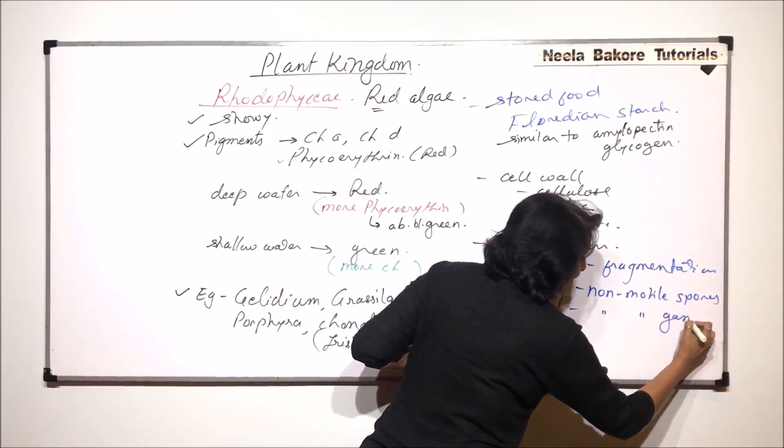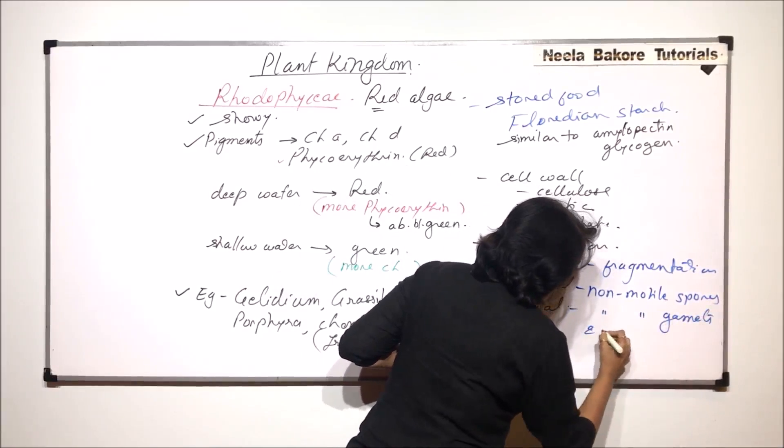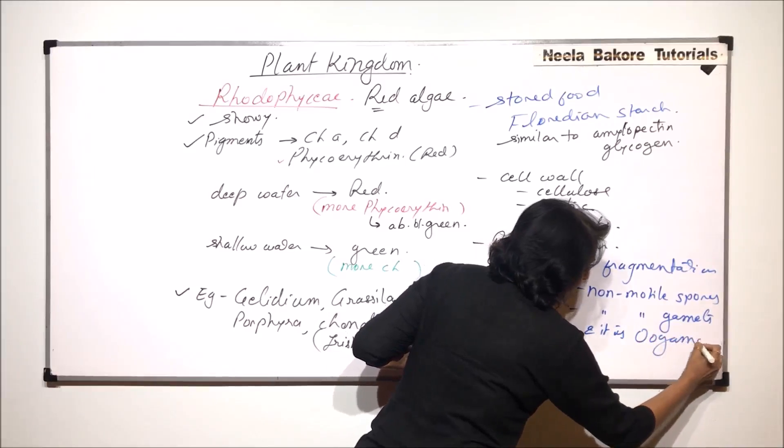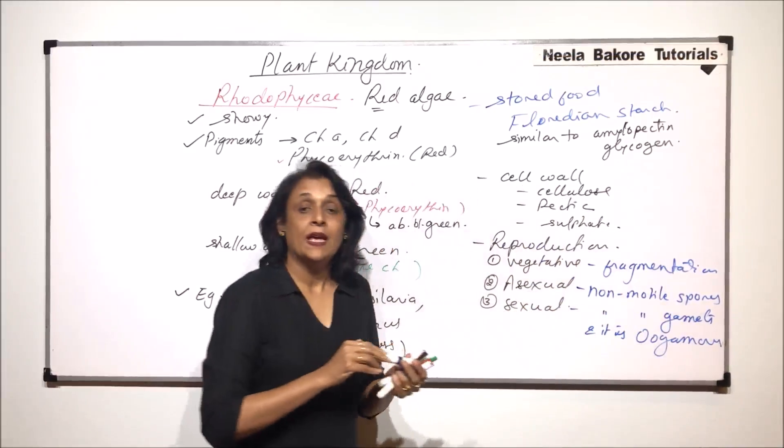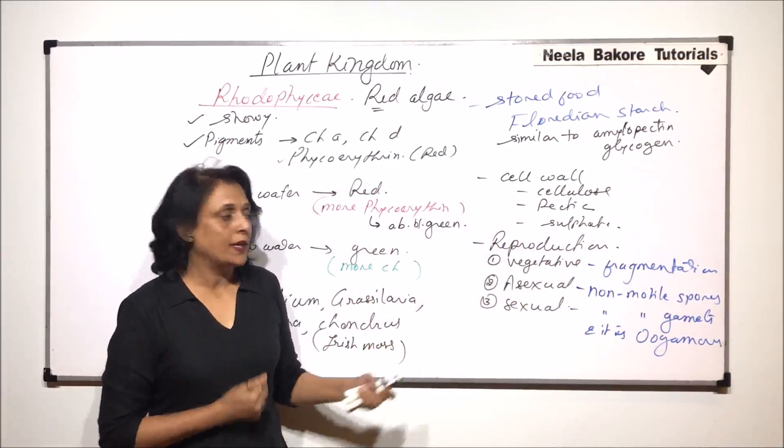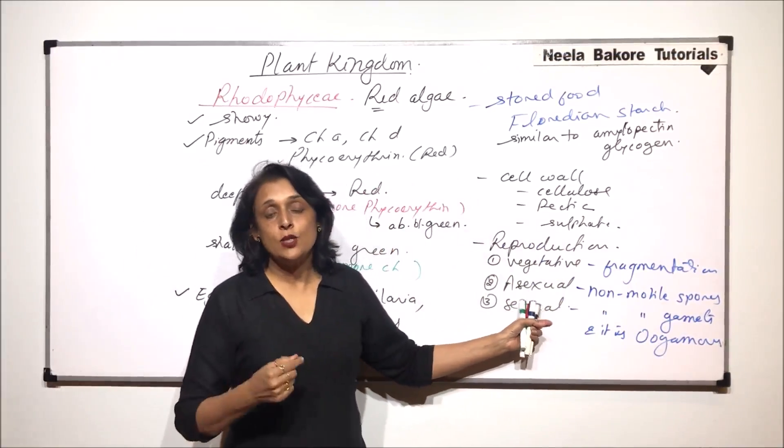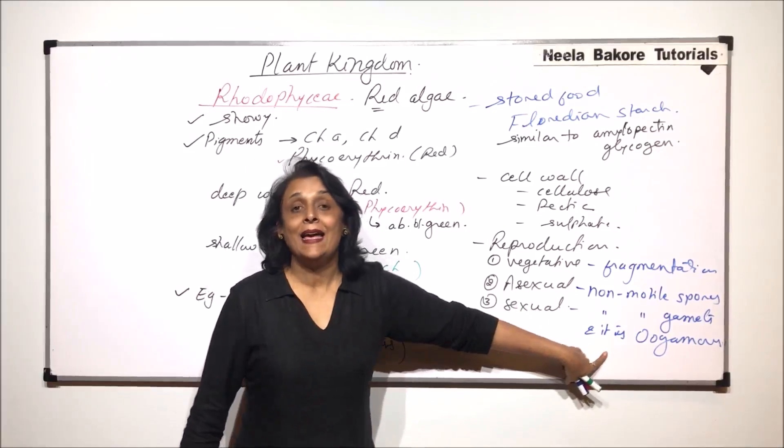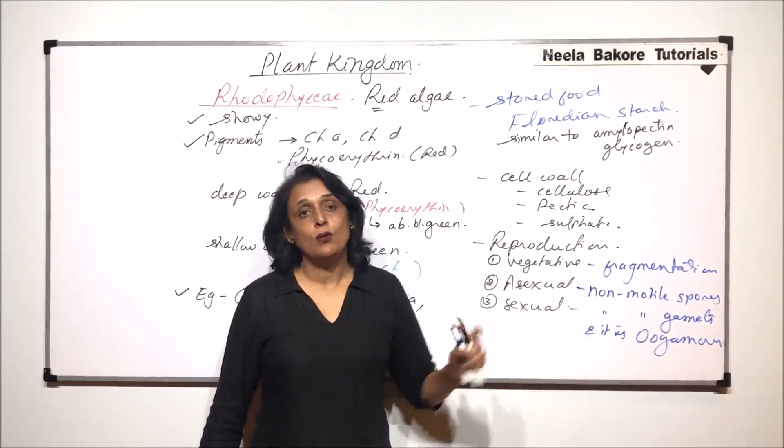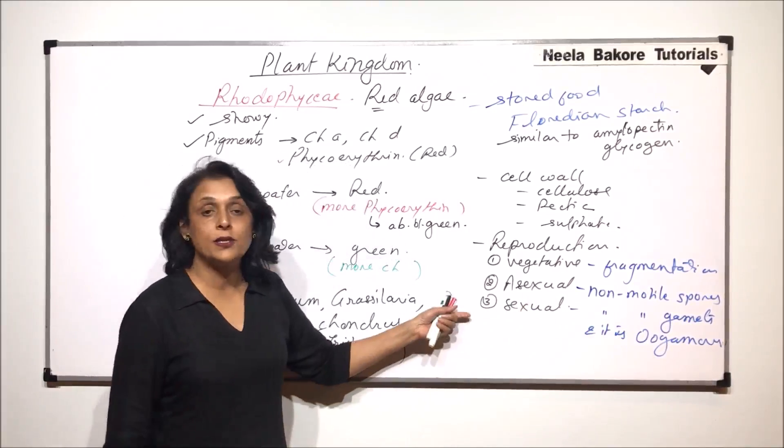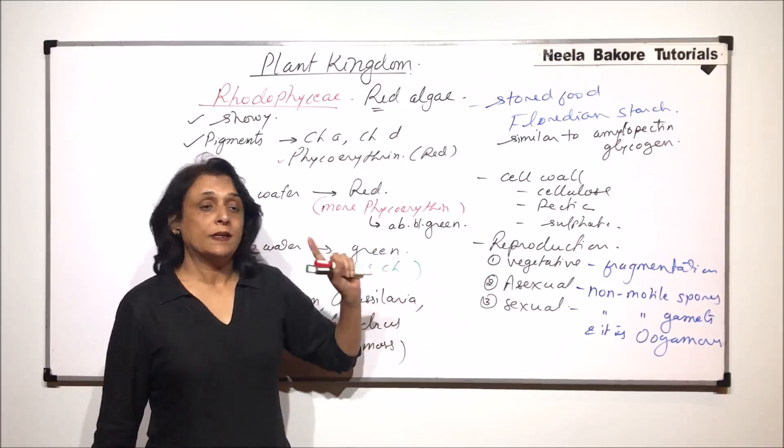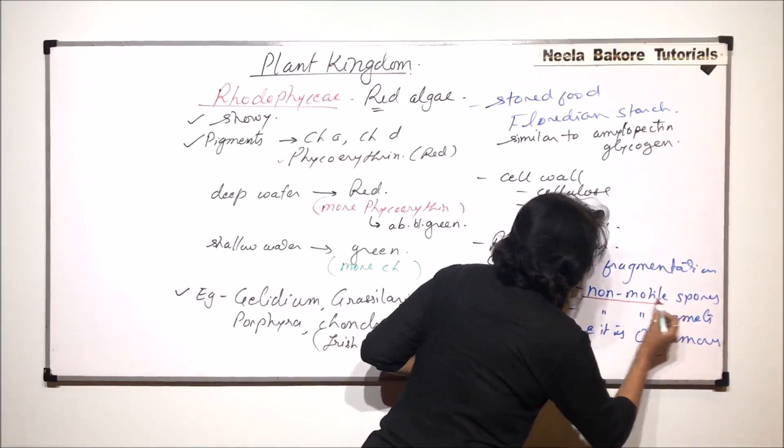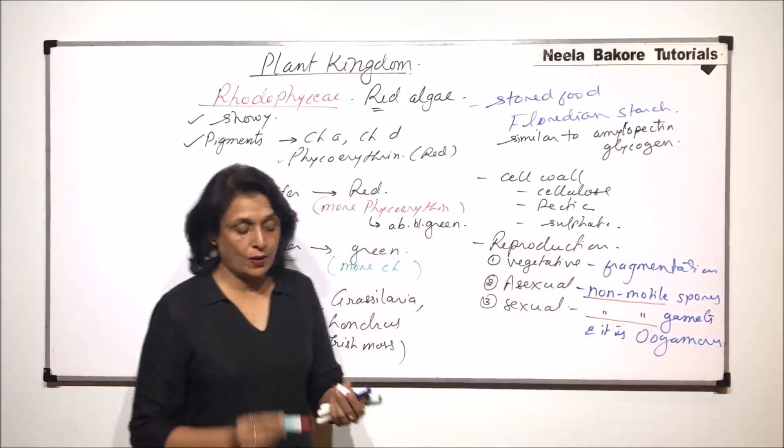Asexual reproduction is by formation of non-motile spores and sexual reproduction is by formation of non-motile gametes and it is oogamous type of reproduction. Oogamous means the egg is stationary, the male gamete is non-motile but is carried to the female gamete and the female gamete is larger. So this is how this reproduction, sexual reproduction takes place. Now one thing which we have noticed here is that the spores are also non-motile and the gametes are also non-motile.